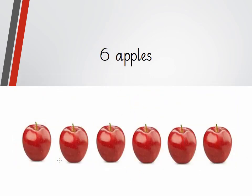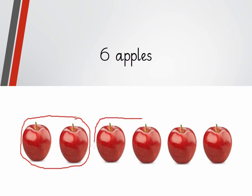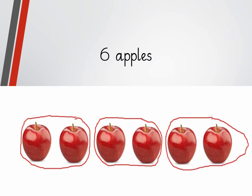Here we have six apples — one, two, three, four, five, six. Let's divide them into pairs and check whether six is an even or odd number. We will make pair one, pair two, and pair three. Six can be divided into three pairs. It means six is an even number.